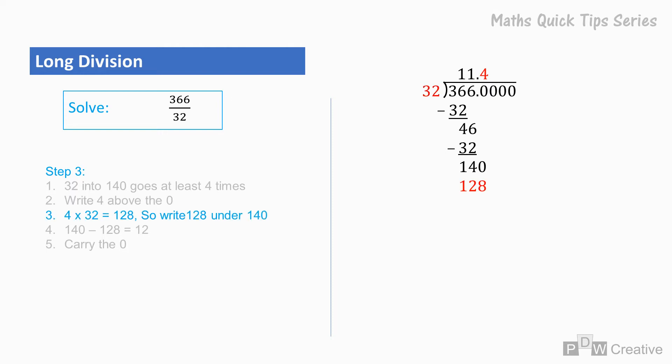4 times 32 equals 128, so write 128 under 140. 140 minus 128 equals 12. Now we carry the 0.